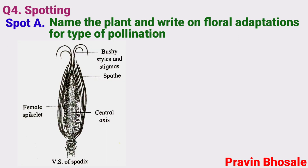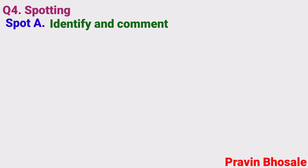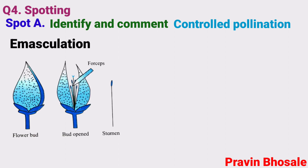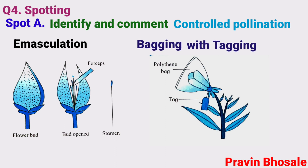If the maize photocopy is kept, you are writing wind pollination. Or identify and comment — it is controlled pollination based on hybridization, that is emasculation, or bagging, and bagging with tagging. So this was Spot A.